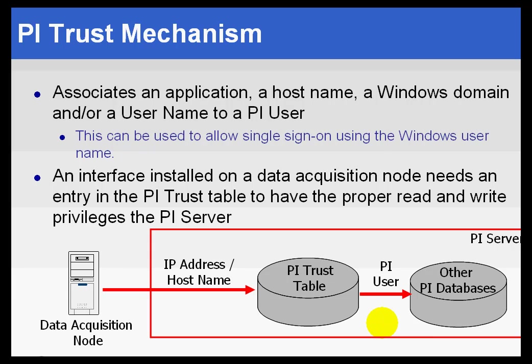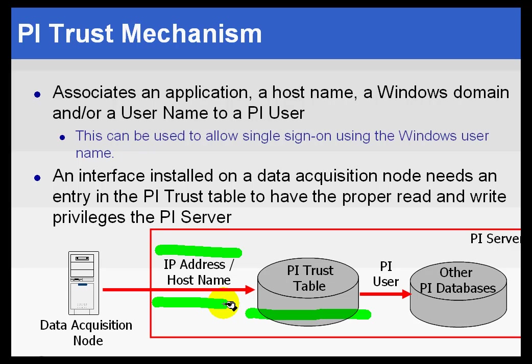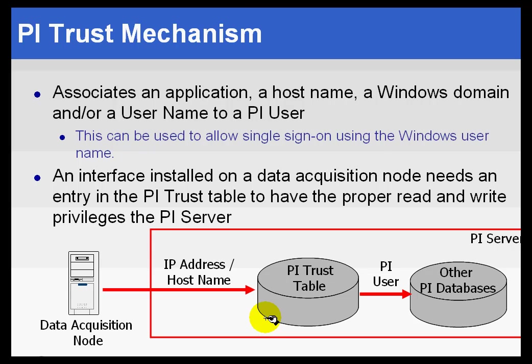It's like the Hollywood cliché of a bunch of people standing backstage trying to get in, and there's a big bouncer who says you're not getting in unless you're on the list. That's what the PyTrust Table looks like — it's a list that says you're not allowed in unless you're on it. You can identify yourself by your IP address, hostname, domain, Windows user, and other credentials. We use those connection credentials to validate whether you are in the Trust Table.